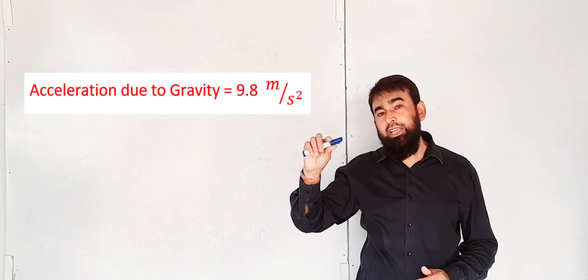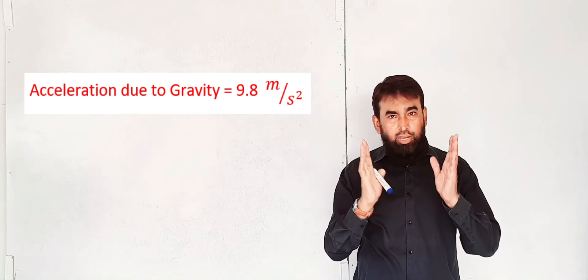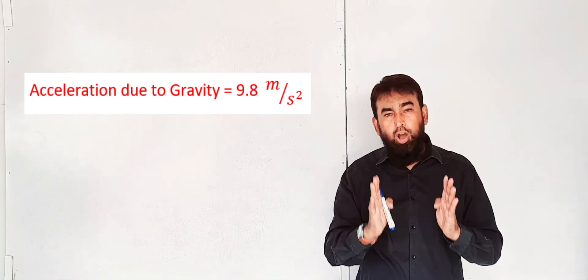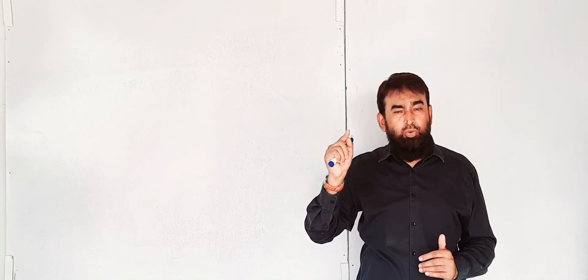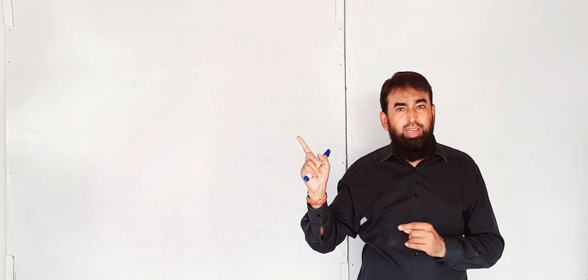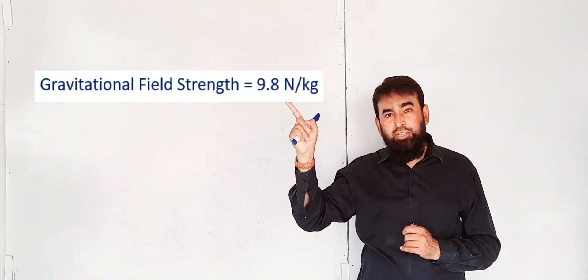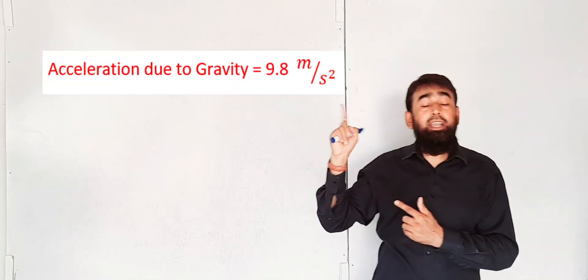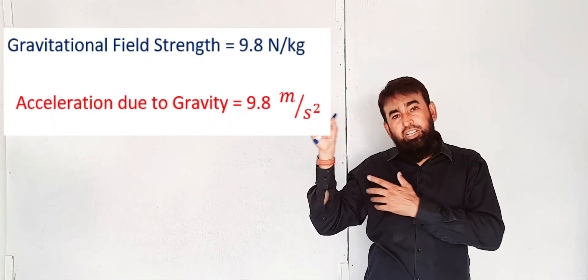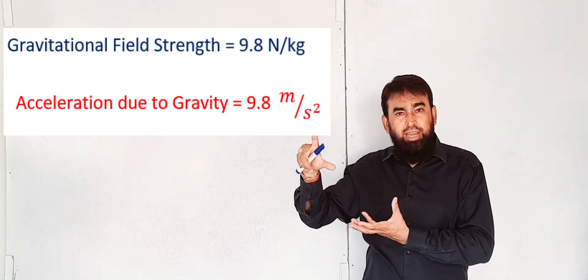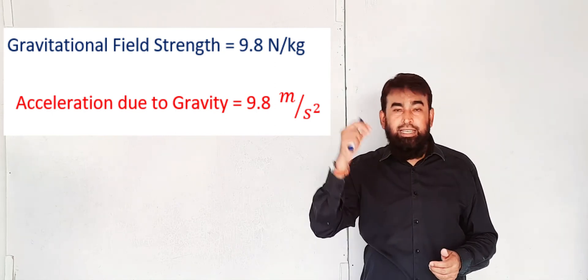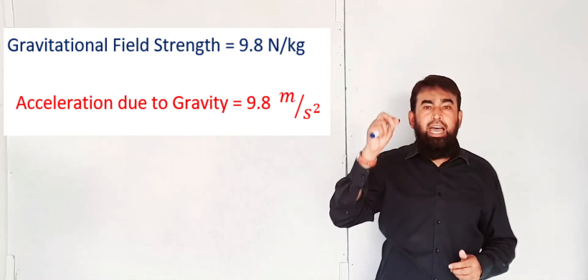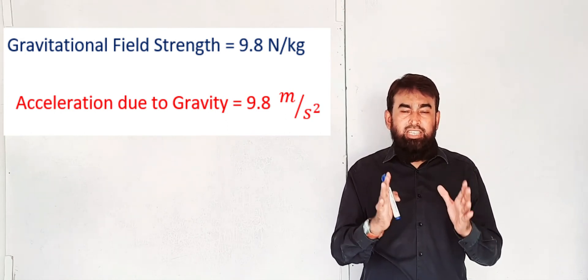That is why we take the acceleration due to gravity as approximately 9.8 meter per second square. Keep in mind that this is an approximate value. Now, the gravitational field strength is 9.8 newton per kg, while the acceleration due to gravity has the unit 9.8 meter per second square. The gravitational field strength shows force on a mass of 1 kg, while 9.8 m/s² represents the change in velocity per unit time — the acceleration due to the force of gravity.